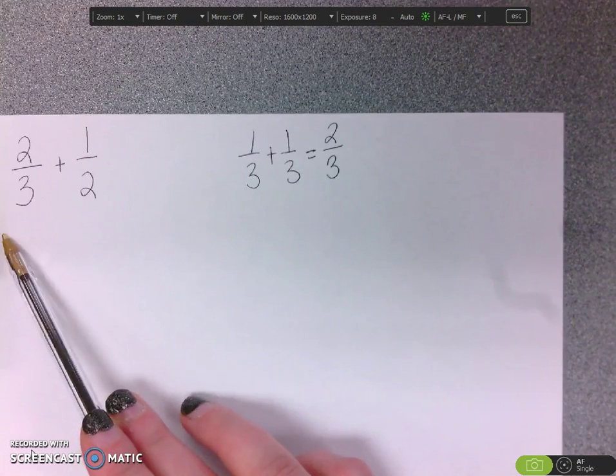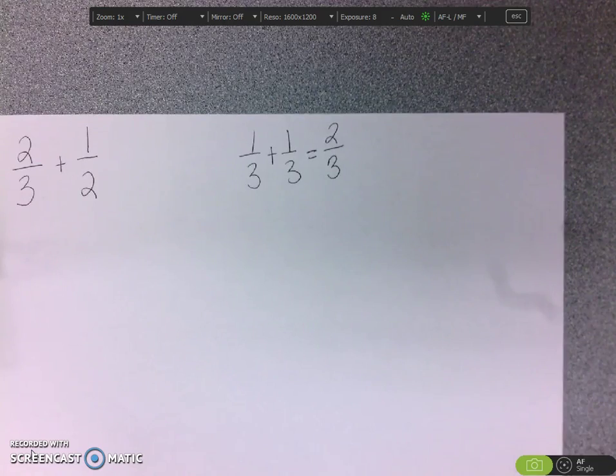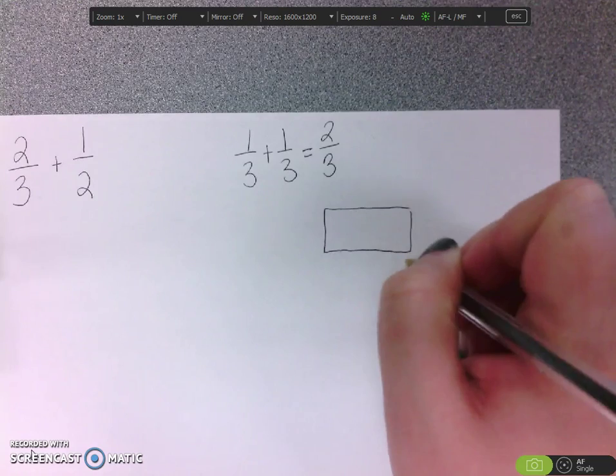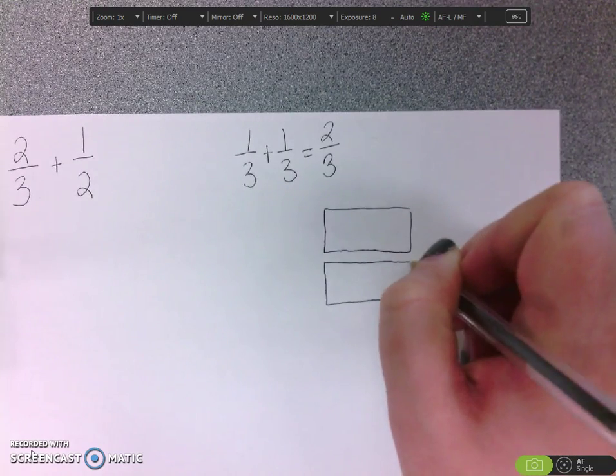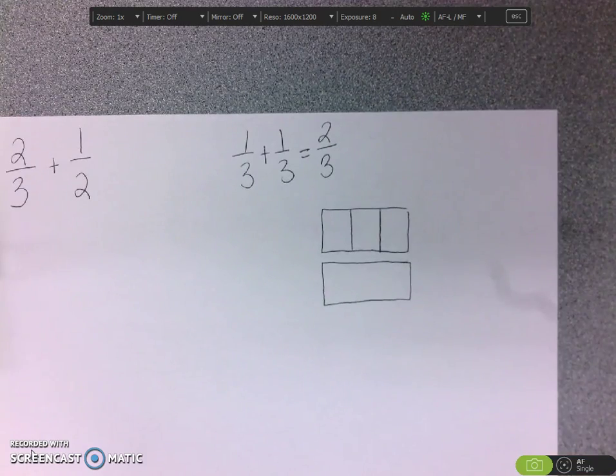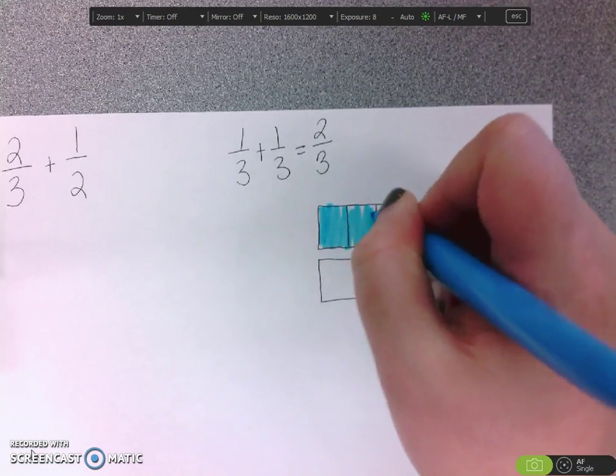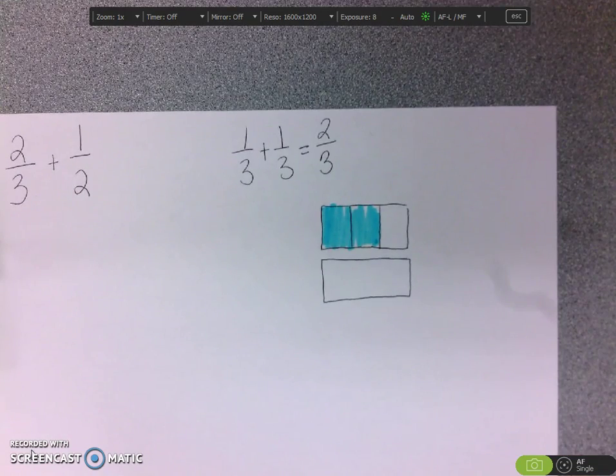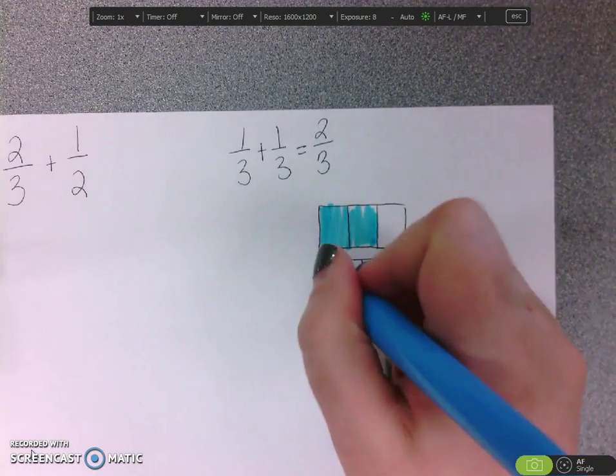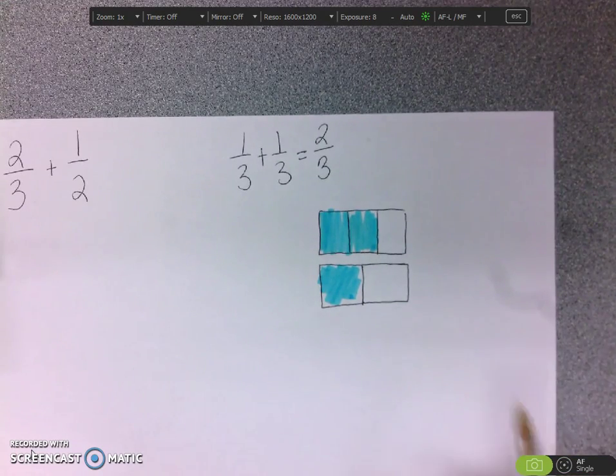...we see that we have thirds and halves, and those aren't the same. It's kind of like having apples and oranges, and it's kind of hard to add things that aren't the same when it's fractions. For example, we had two-thirds, which would be right here. You would have two out of three. How do you add one-half to that? It looks kind of hard like this.